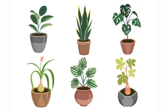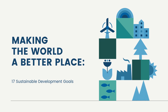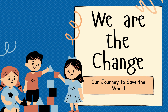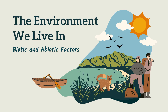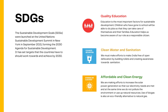Sustainable development can actually happen when each of us works towards it. We have to become responsible citizens who can protect the environment through our own efforts. Now we will look at the various ways how people can help work towards sustainable development goals. Quality education — education is the most important factor for sustainable development. Children who have gone to school will be able to do jobs so that they can take care of themselves and their families. Education helps us become aware of our roles as responsible citizens.